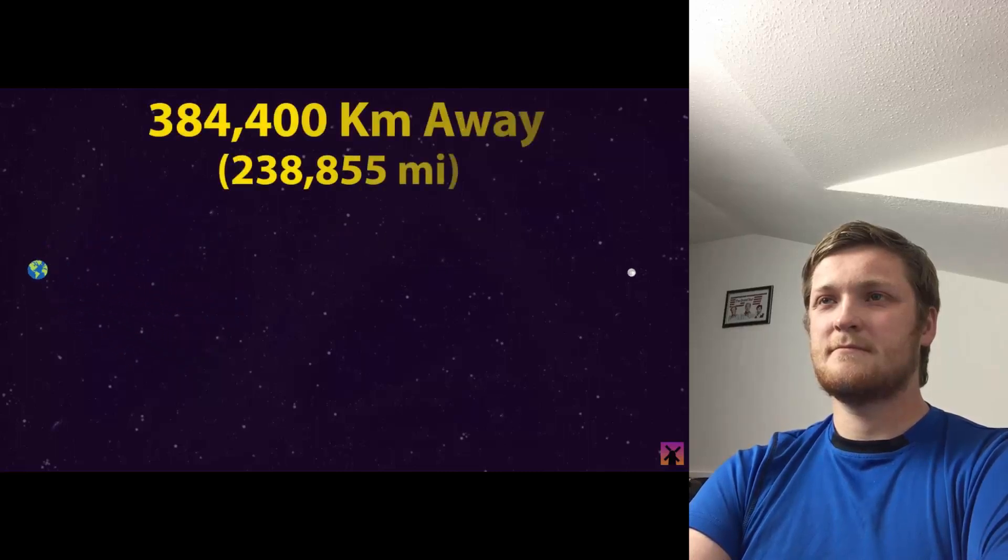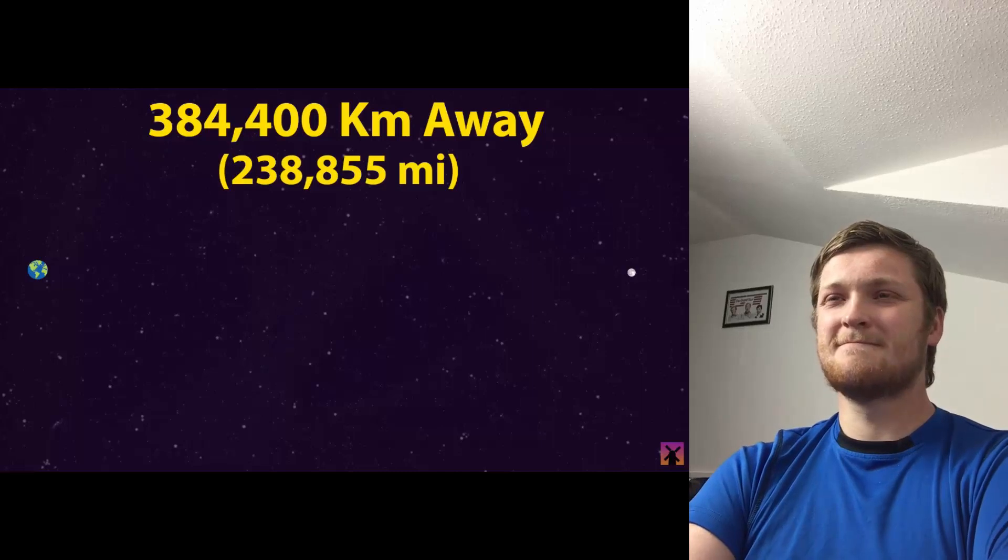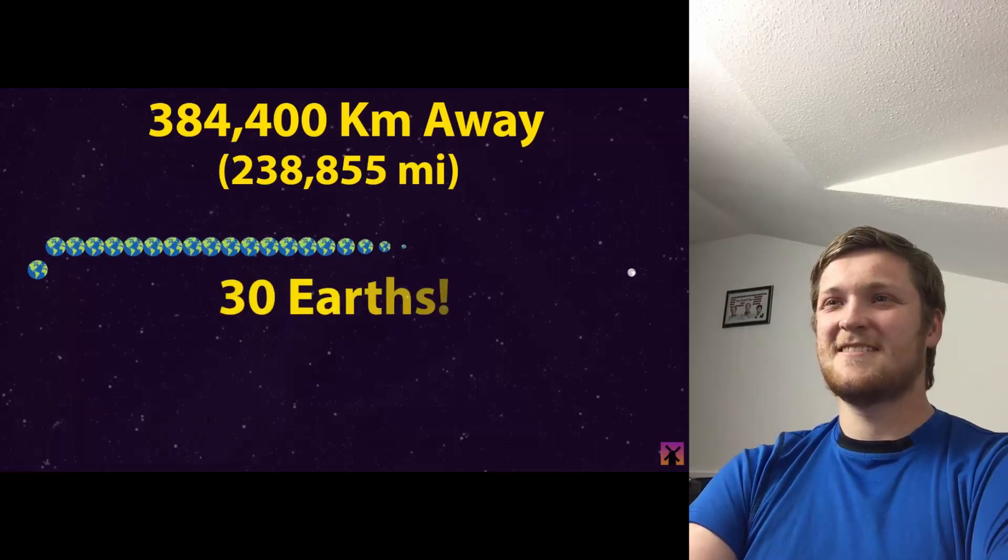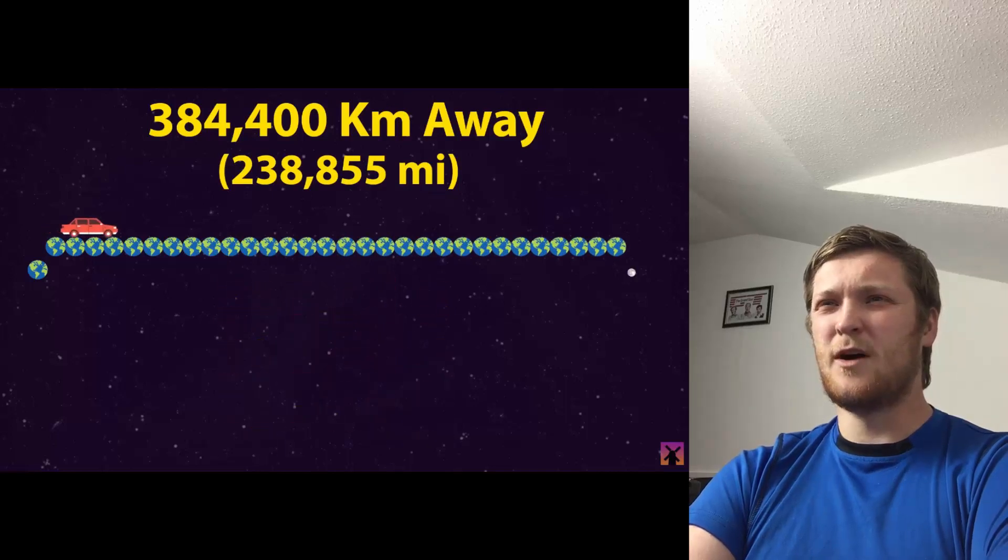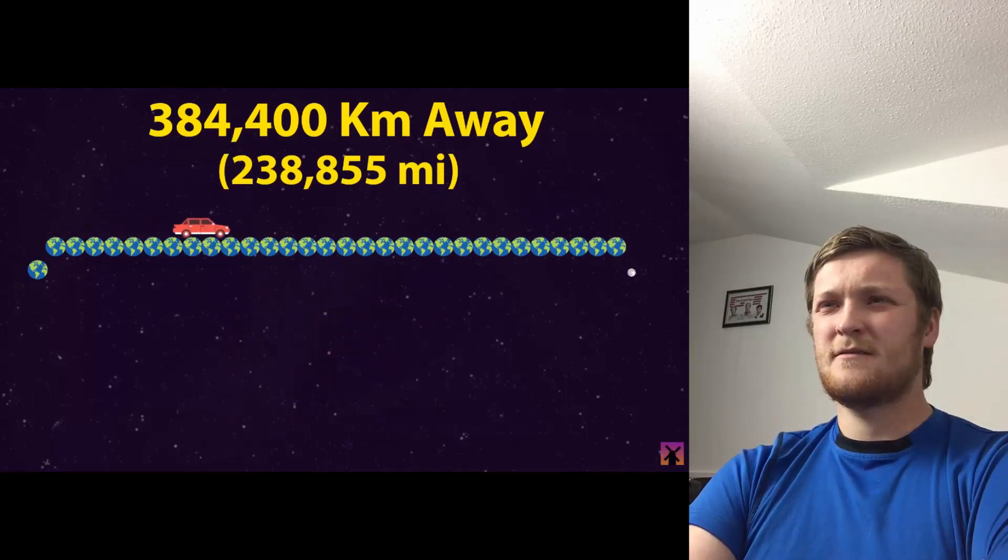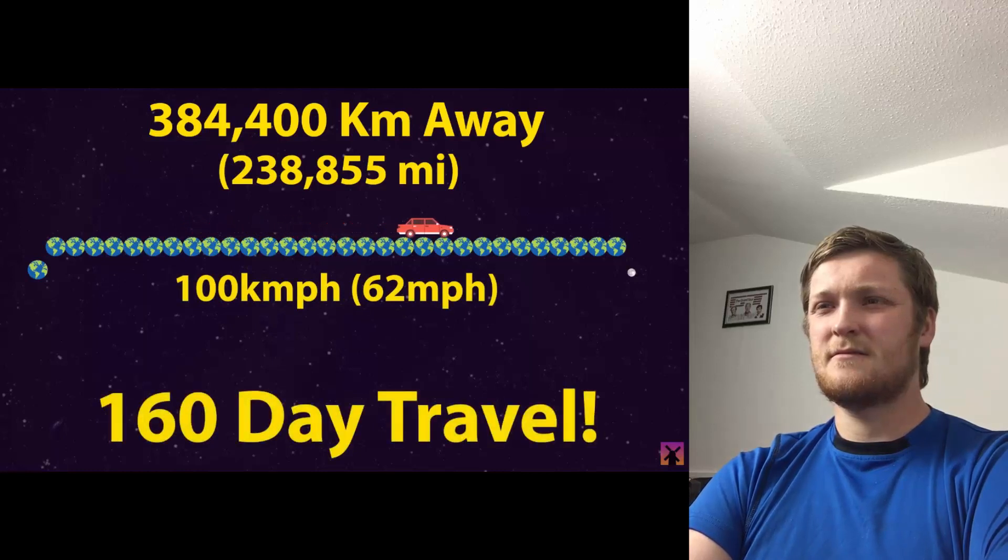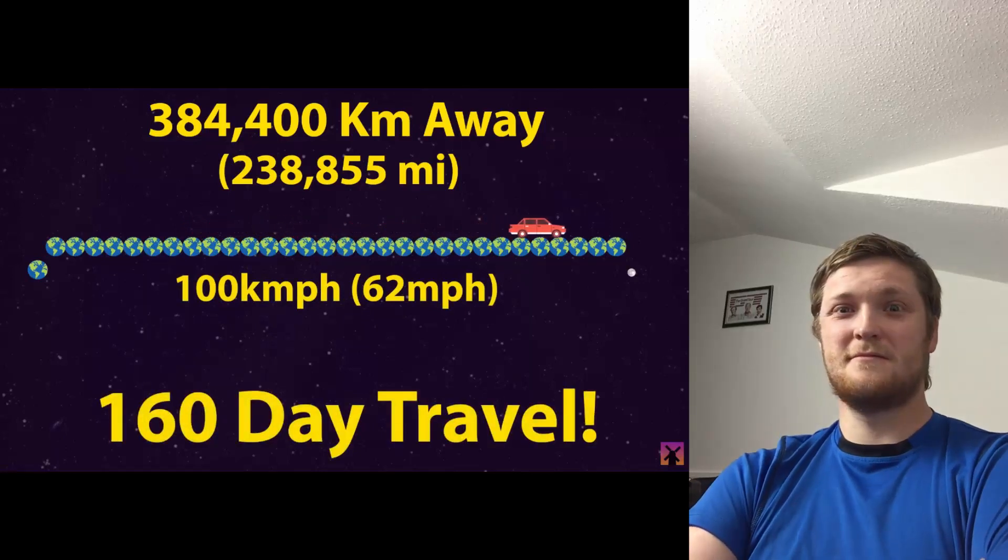Let's start by zooming out to our nearest cosmic neighbor, the moon. You may think the moon is very close to Earth, but in reality, the moon is actually about this far away: 384,400 kilometers away on average. You could fit 30 entire Earths in between this distance. If you drove a car at 100 kilometers per hour, it would take about 160 days to drive the entire distance. Wow, that'd be some road trip.